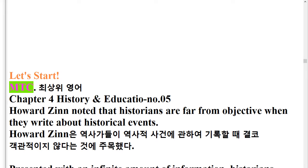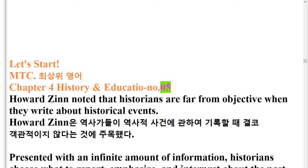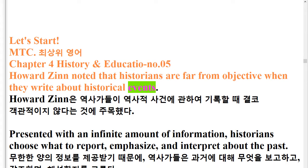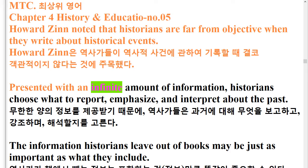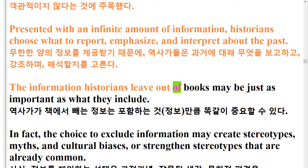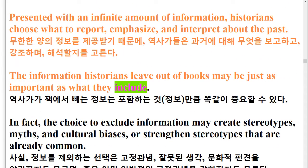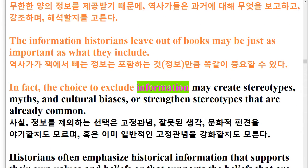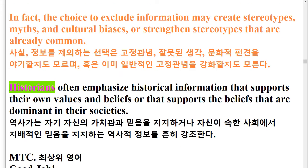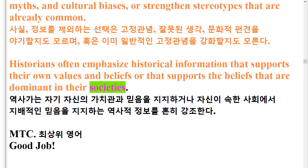Howard Zinn noted that historians are far from objective when they write about historical events. Presented with an infinite amount of information, historians choose what to report, emphasize, and interpret about the past. The information historians leave out of books may be just as important as what they include. In fact, the choice to exclude information may create stereotypes, myths, and cultural biases, or strengthen stereotypes that are already common. Historians often emphasize historical information that supports their own values and beliefs or that supports the beliefs that are dominant in their societies.